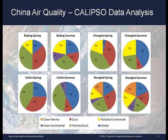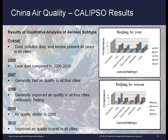After analyzing the CALIPSO aerosol profiles, the team used Microsoft Excel to organize the data by month, year, and season. The graphs show the measured percentage of each aerosol present in each city for the spring and summer seasons, which show elevated levels of air pollution. Overall, there is dust, polluted dust, and smoke present all year long in each city. The CALIPSO data generally suggests improved air quality in all four cities, particularly Beijing. However, there is not enough evidence to indicate a positive correlation between Beijing Olympic air quality improvement efforts and actual improved air quality, and there are only a few CALIPSO profile images per month, making it difficult to distinguish smoke and dust.